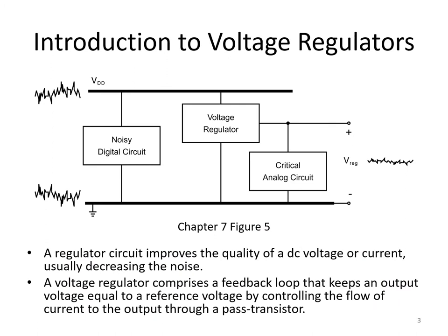In general, a regulator circuit improves the quality of a DC voltage or current, usually decreasing its noise. Often this is the supply voltage for some critical analog circuit. A typical scenario is where an overall supply voltage is quite noisy because of other circuits operating under the same supply voltage. A common scenario is on mixed-signal integrated circuits where digital and analog circuits coexist under the same supply voltage. Digital circuits are notorious for introducing large transient spikes of current onto the supply, giving rise to a noisy waveform. Analog circuits may be sensitive to such noisy supply voltages, so a voltage regulator intervenes, accepting the noisy supply and producing a cleaner, quieter supply voltage for the analog circuit.